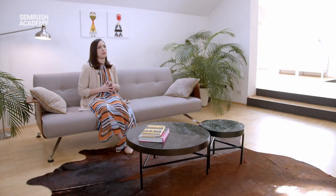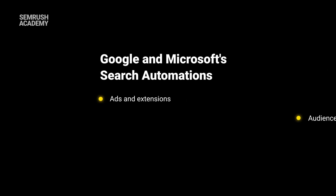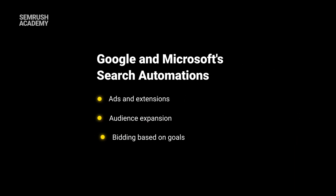Google and Microsoft search automations are as follows: ads and extensions auto-created based on existing creative as well as winning creative from other advertisers in your industry; audience expansion via similar audiences and user behavior; and bidding based on goals. We'll cover those specific strategies in a later lesson.